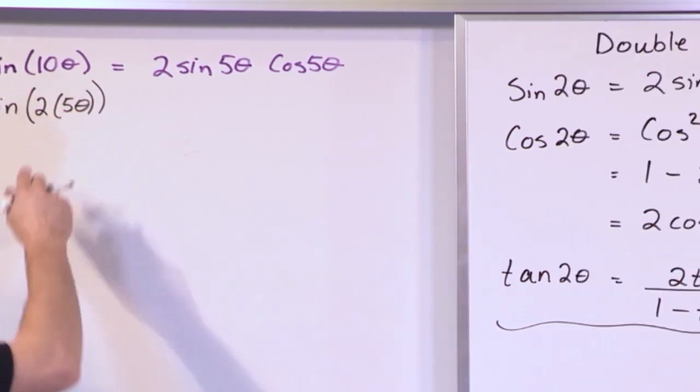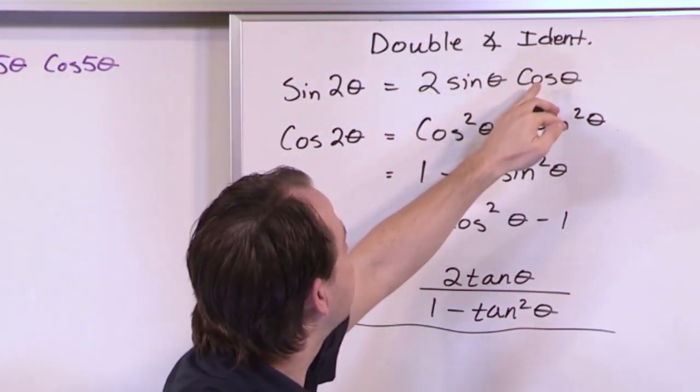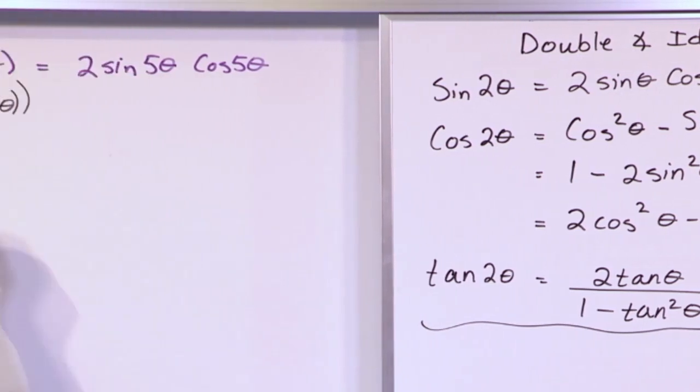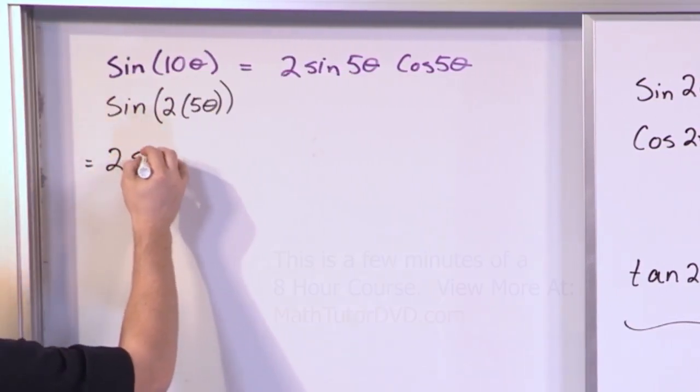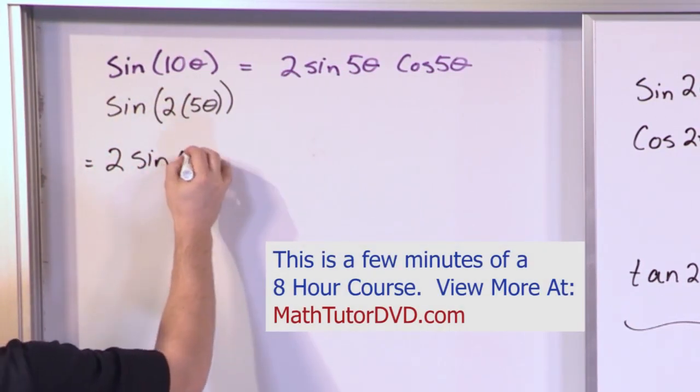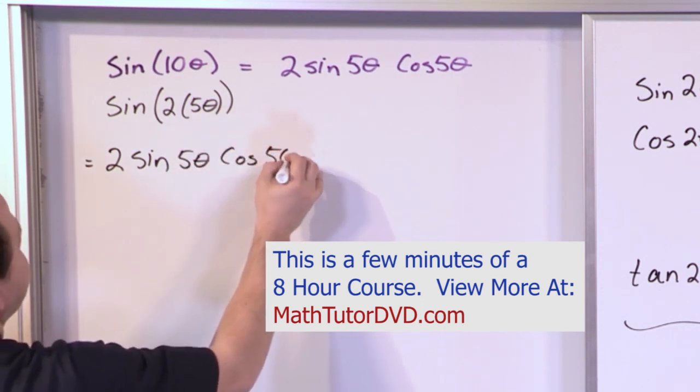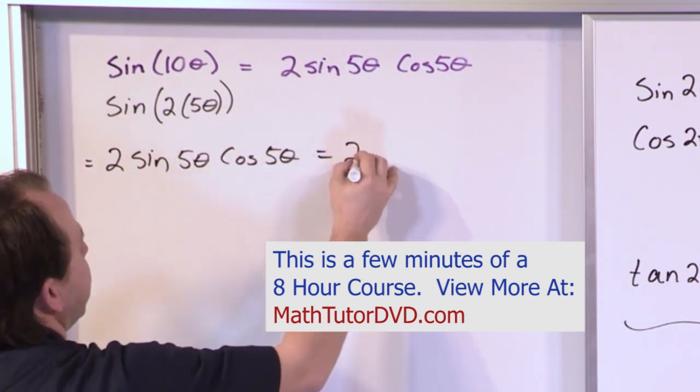So 2 times whatever your angle is, you just write it as 2 times the sine of the angle times the cosine of the angle. So in this case, we'll write it as 2 times the sine of the angle. In this case, it's 5 theta times the cosine of the same angle, which is 5 theta. And this exactly matches what we have here.